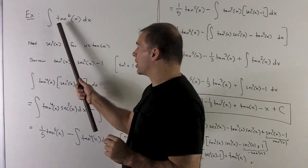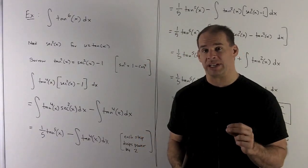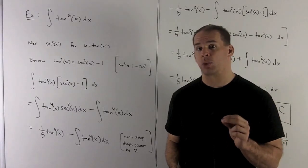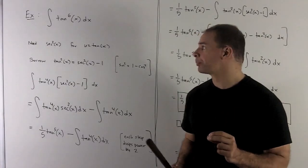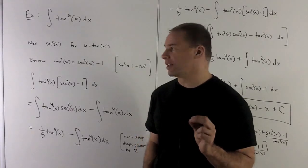If I wanted to do a u substitution, u equal to tangent of x, we would need to compensate by including a secant squared, because secant squared is the derivative of tangent. So let's see if we can somehow inject a secant squared into the problem.